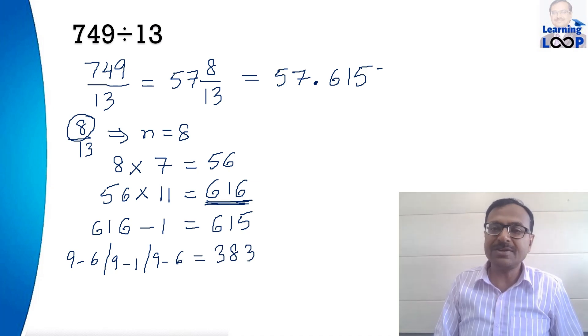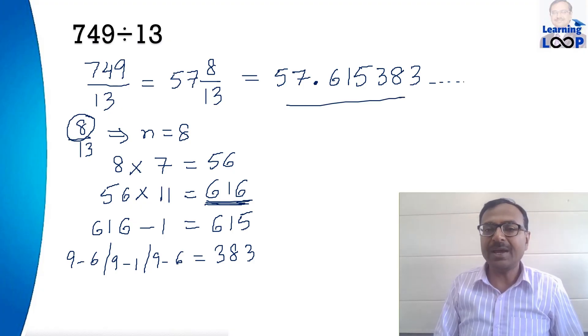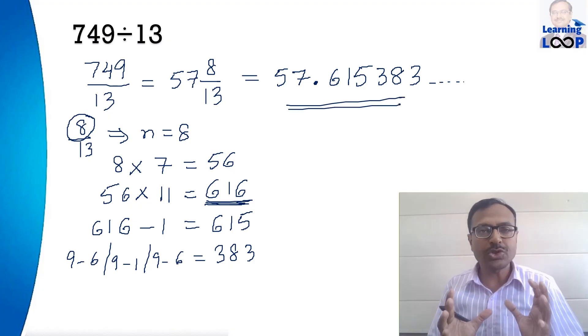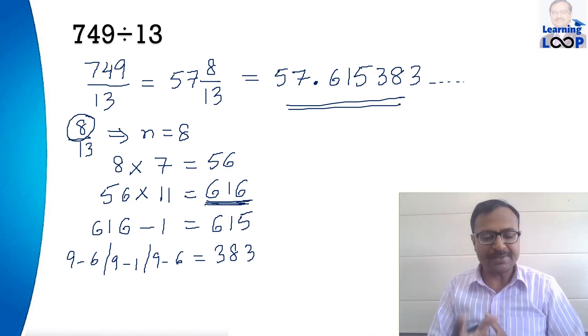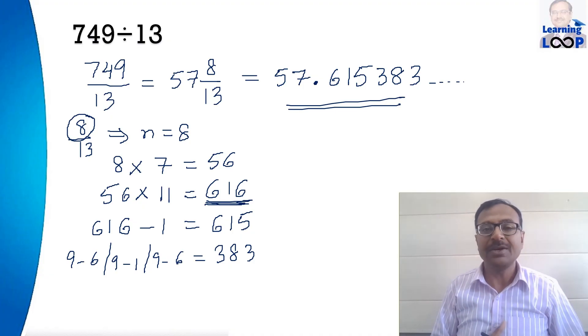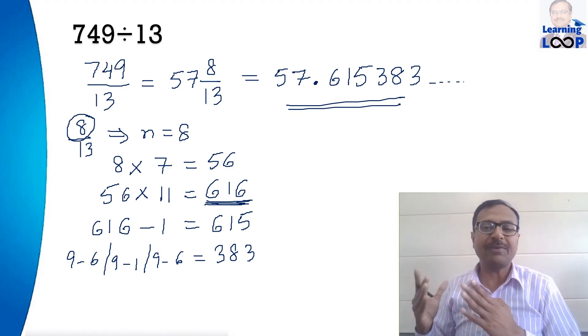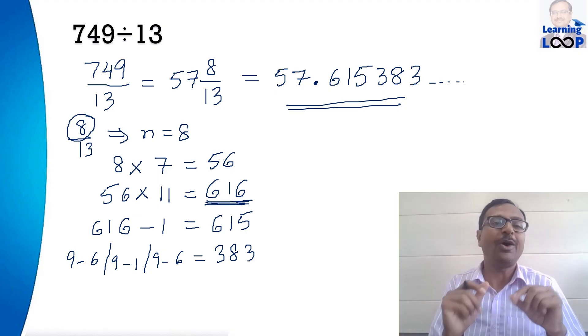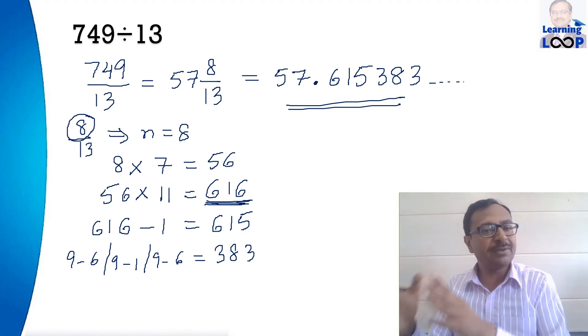So the last three digits of the quotient will be 383 and obviously this will go on and on but we have found out the quotient up to six decimal places. Now pick up your calculators and check 749 divided by 13 should be 57.615383. That is how you find the decimal part of any number divided by 13.